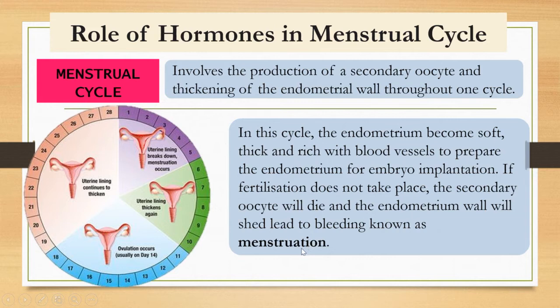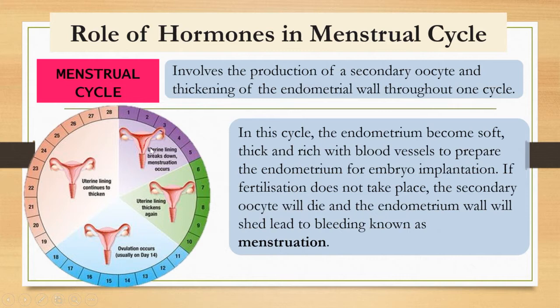In summary, the menstrual cycle involves the production of the secondary oocyte and thickening of the endometrial wall. The endometrium becomes soft and thick, rich with blood vessels, to prepare for embryo implantation. If fertilization does not take place, the secondary oocyte dies and the endometrium wall sheds, causing bleeding known as menstruation.